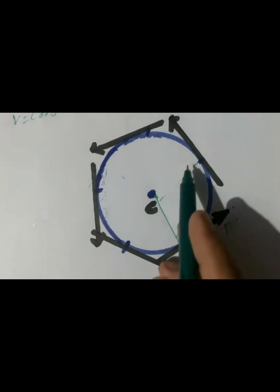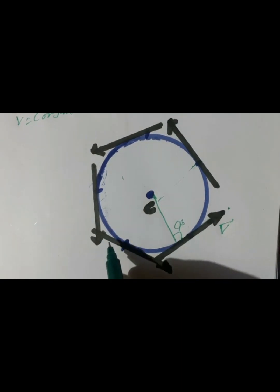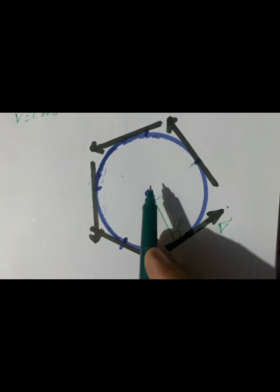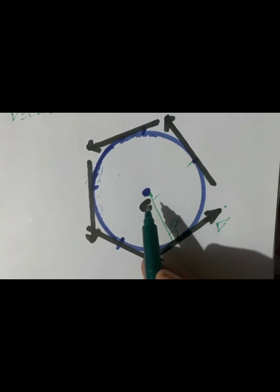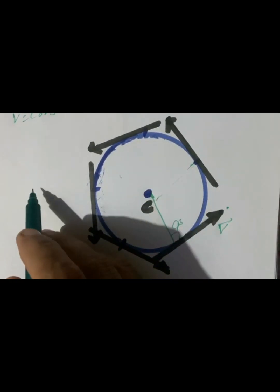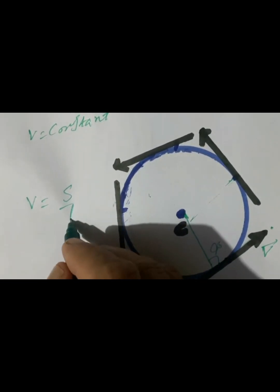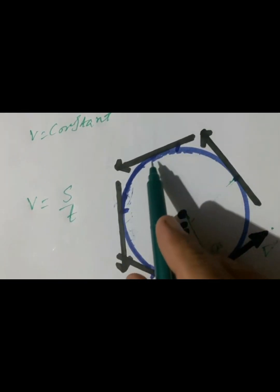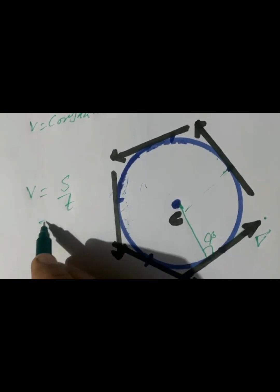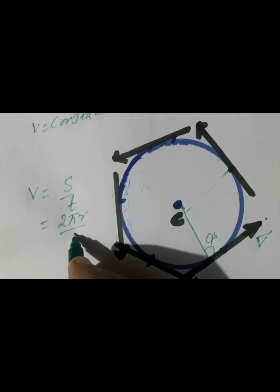The motion of a fan is an example of uniform circular motion. We are looking for the speed V, which is equal to S divided by T. In one revolution, the distance covered by the body is equal to the circumference of the circle, so the speed is 2πR divided by T.